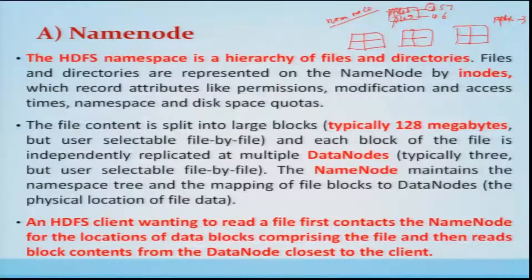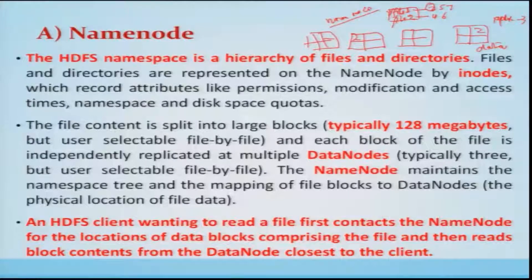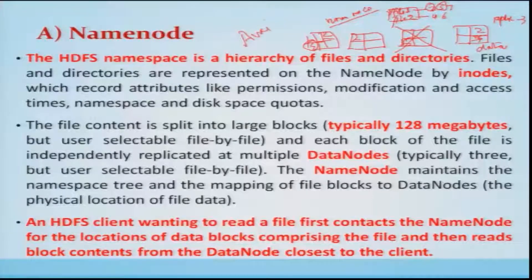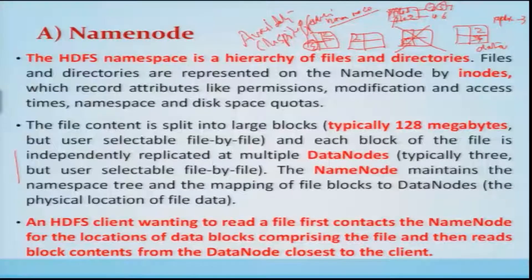With default replication of 3, for example, block number 2 is stored on 3 out of 4 DataNodes. Similarly, block number 5 is stored on any 3 of them. If one node crashes or fails, the data is already available on two other nodes — ensuring availability in spite of failure. HDFS clients wanting to read a file first contact the NameNode for block locations and then read the block contents from the DataNode closest to the client.